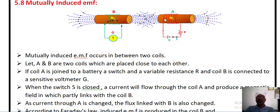Coil A has N1 turns and coil B has N2 turns. Coil A is connected to a battery, a switch, and a variable resistance R.